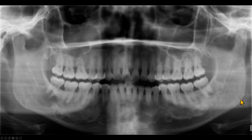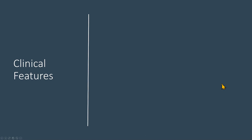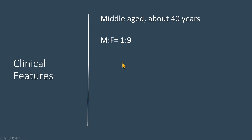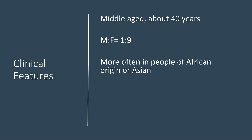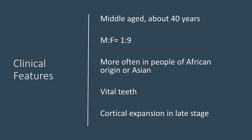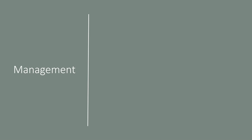Coming back to the panoramic radiograph, we saw expansion, but these lesions were not visible on the periapical or panoramic radiograph. The CBCT scan allowed us to see lesions associated with most of the teeth. Regarding clinical features: florid or periapical cementoosseous dysplasia is typically seen in middle-aged women around 40 years of age, and females are nine times more likely to be affected. It is most often seen in African-American women, but also in Asian and Caucasian individuals. The teeth are vital unless otherwise involved, and cortical expansion — as seen in our case — is usually a late-stage finding.